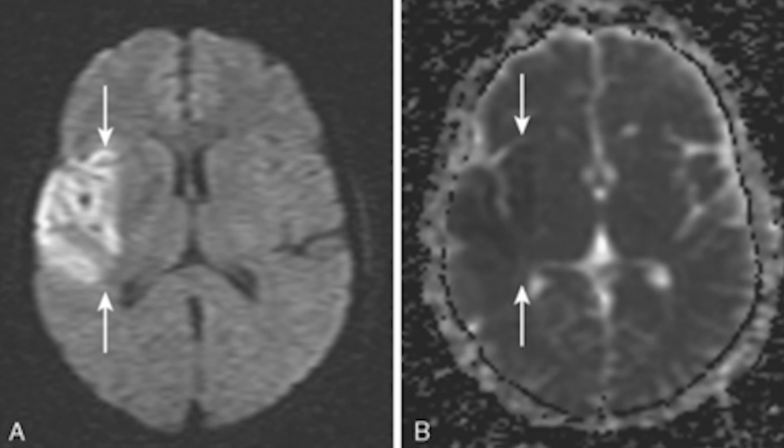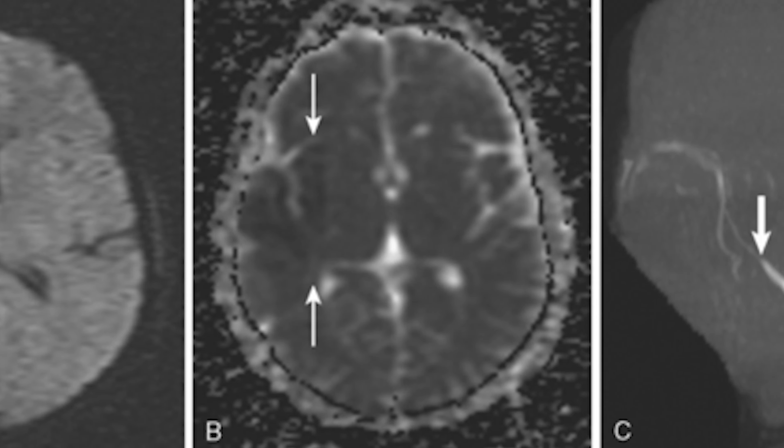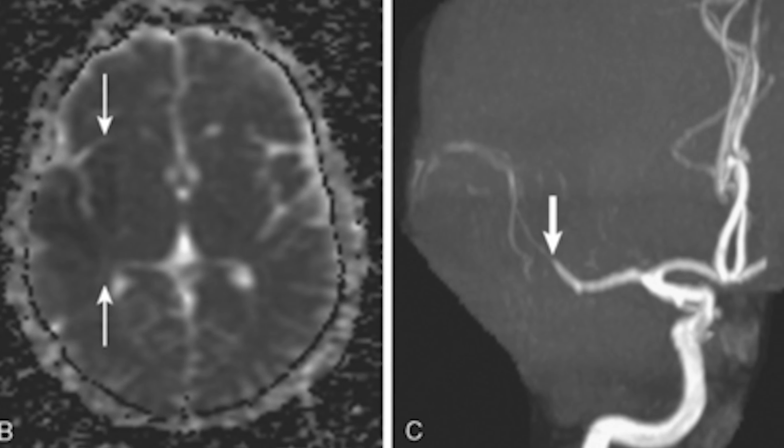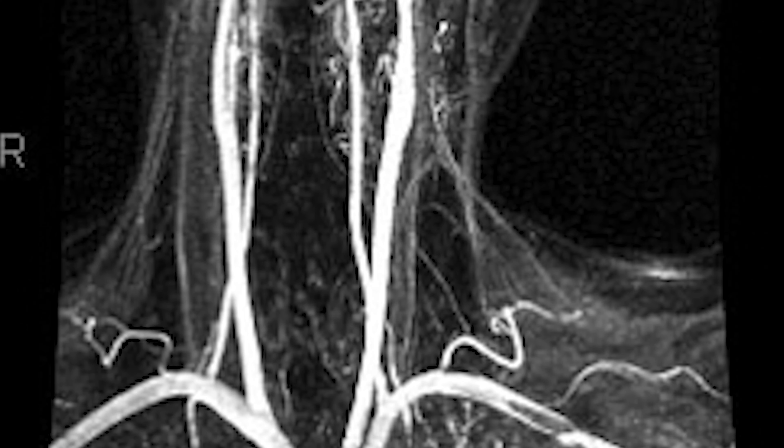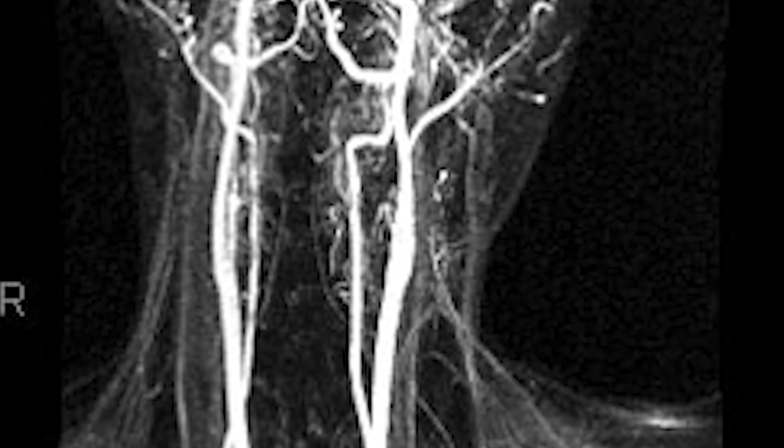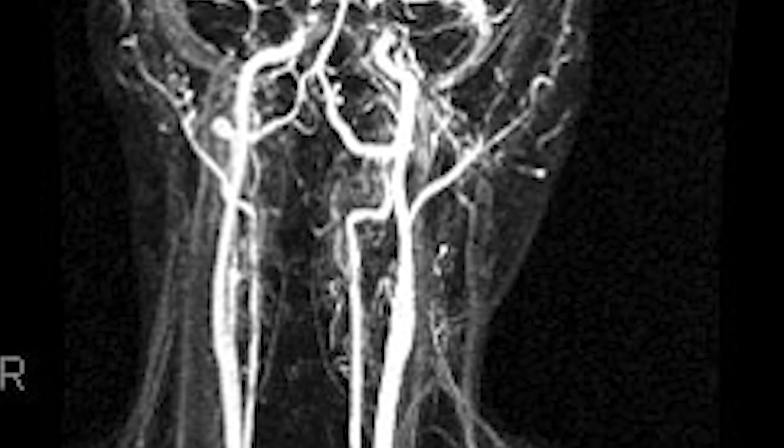We do MRI brain. When you do MRI, we also do MRI neck vessels. Why? Because there is a stroke — there can be a stroke originating from the heart. If we only do a brain scan, we can't miss a block in the neck or heart. That is why we do the MRI scan.